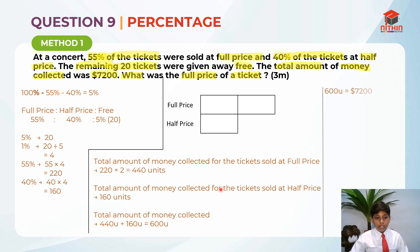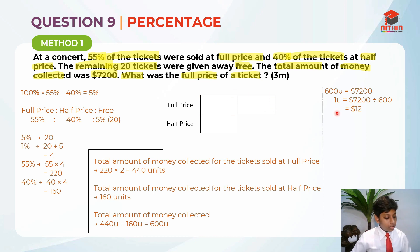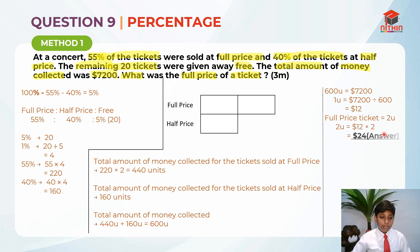600 units equals $7,200. So we find 1 unit: 7,200 divided by 600 equals $12. The full price of the tickets is 2 units, so we find 2 units: 12 times 2 equals $24. So $24 is the answer for question 9.